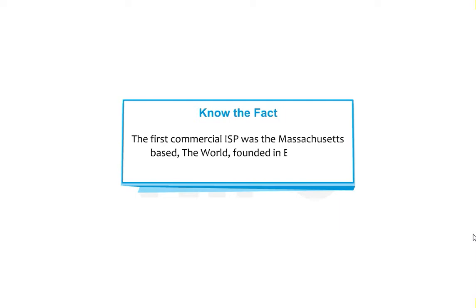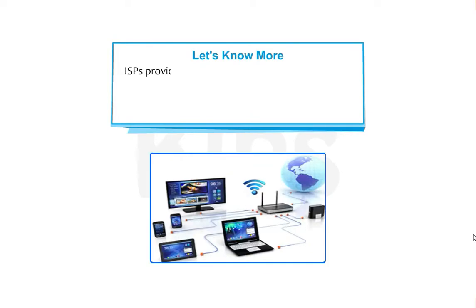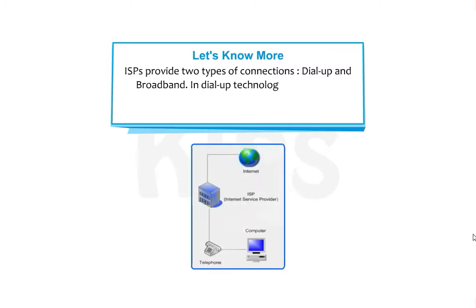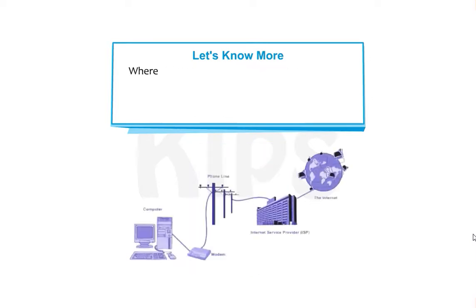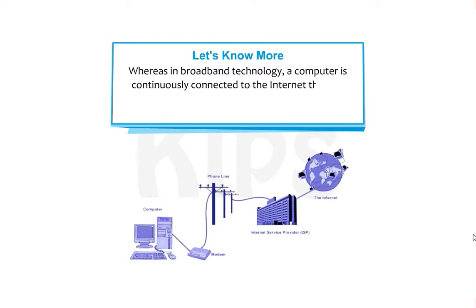ISPs provide two types of connections: dial-up and broadband. In dial-up technology, you have to dial a number to connect to the internet through an existing phone line. In broadband technology, a computer is continuously connected to the internet through the phone line, and it provides high-speed internet access.